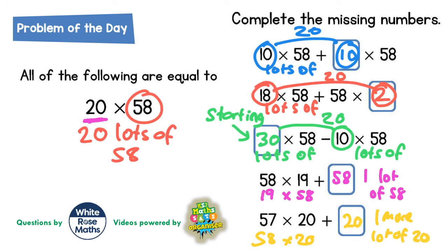So this missing answer must be 20. Think about it: 57 times 20 plus an extra 20 would give you 58 times 20. And 58 times 20 is just the other way around than 20 times 58. So there's all your missing answers.